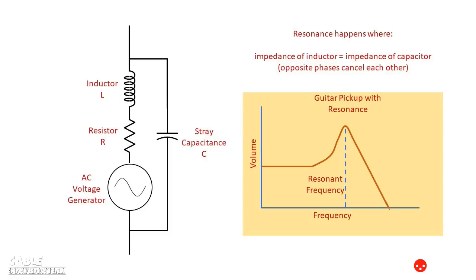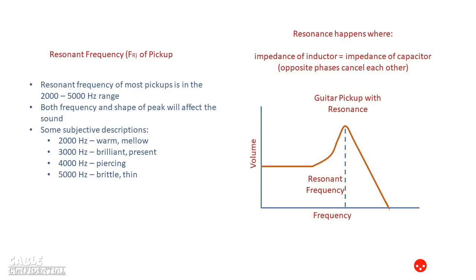This is used in guitar pickups to accentuate certain frequencies and give the pickup its characteristic sound. Guitar pickups have a resonant frequency that is typically in the 2000 to 5000 hertz range. The sound of the pickup will be affected by not just the resonant frequency, but also by the shape and height of the peak. A pickup with a resonant frequency of 2000 hertz may sound warm and mellow, while with a peak of 3000 hertz it may sound brilliant and present. A peak at 4000 hertz may sound piercing, and at 5000 hertz even brittle or thin. The other characteristics of the guitar and strings will also affect this of course.